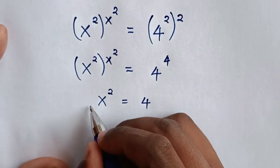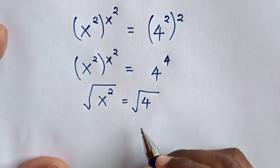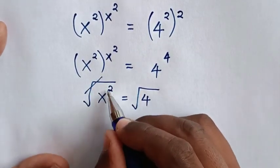Then to find the value of x, we'll apply square root in both sides, so this square root will cancel with square.